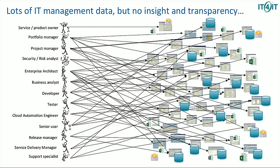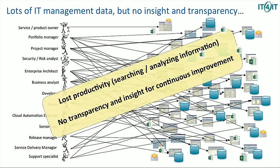When key stakeholders need to find information in the IT organization — for example, a service owner wanting to know what their services are, how well they're performing, the risks, the costs, when the next release is coming, the backlog status, audit findings, and contract end-of-life dates — today they don't have that information. It takes a lot of time to find everything they need. The same applies to project managers, risk analysts, and others. There's a lot of lost productivity from people searching for information and creating and maintaining spreadsheets.